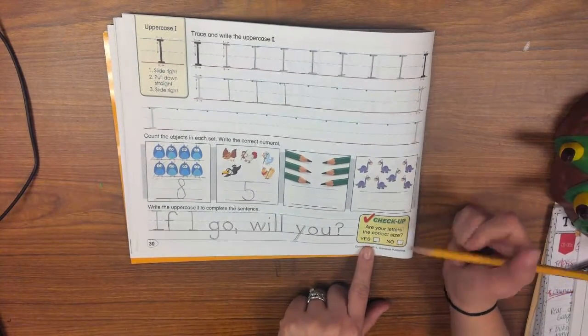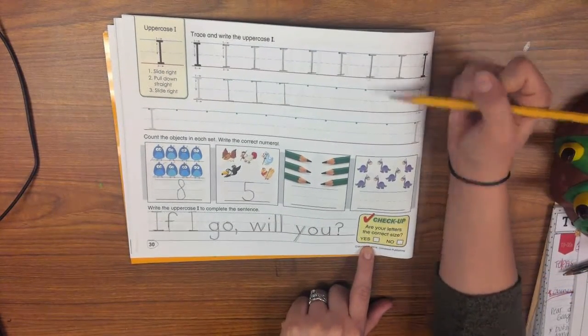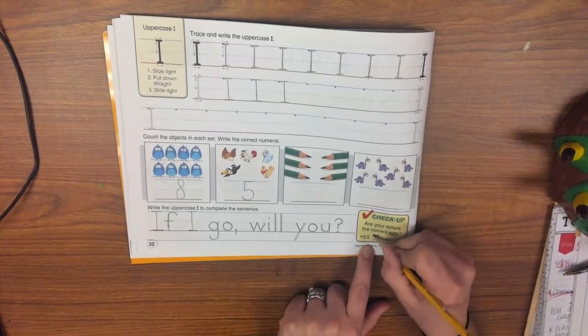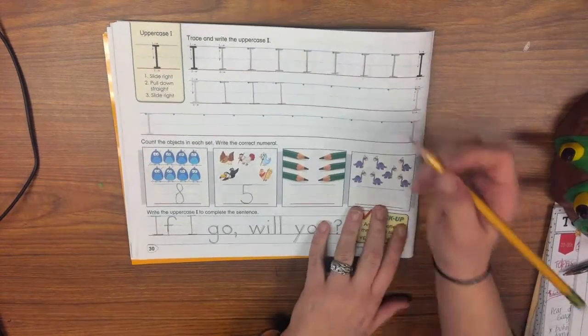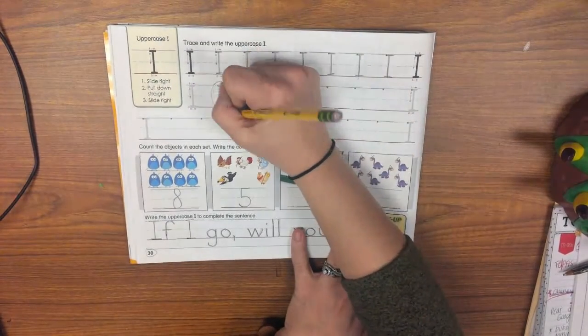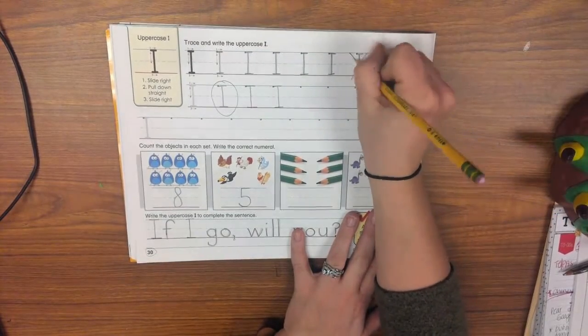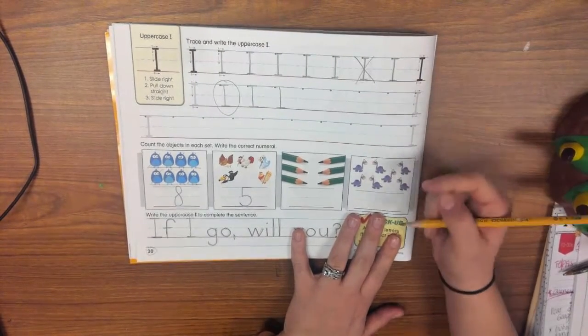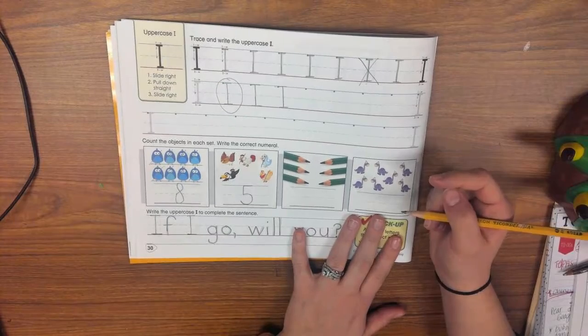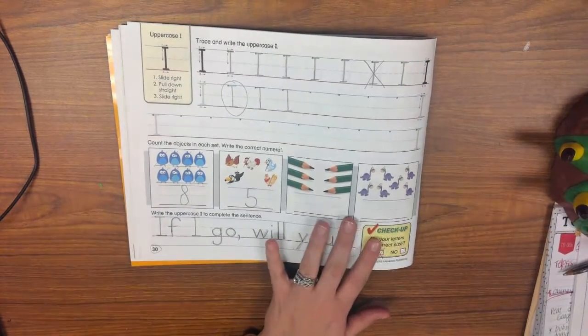Alright, now do a checkup. Are your letters the correct size? Are they touching the top and the bottom line? If they are, you can put yes. I'm going to circle my best looking I. I think that's this one. And put an X on my I that is not so good looking. That one I could have fixed up a little better. Alright guys, can't wait to see how yours turn out.